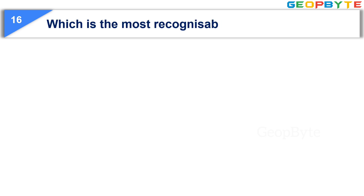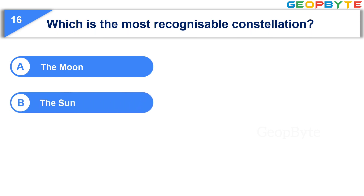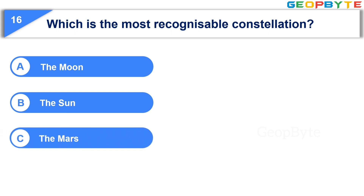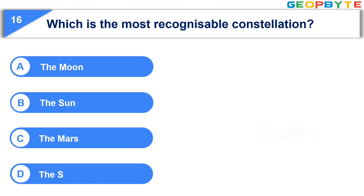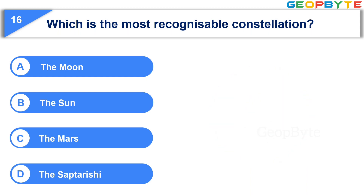The next question: Which is the most recognisable constellation? Option A: The moon. Option B: The sun. Option C: Mars. Option D: The Saptarishi. Your time starts now. Your time is up and the correct answer is Option D: The Saptarishi.